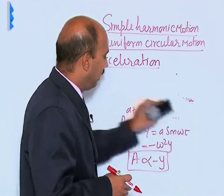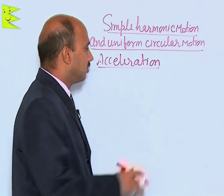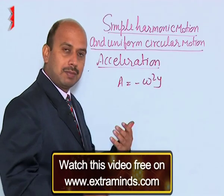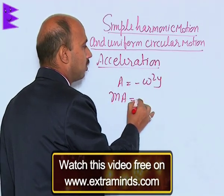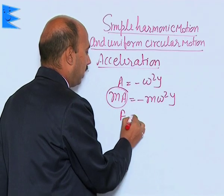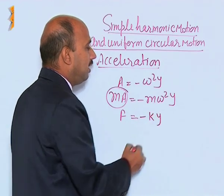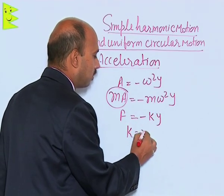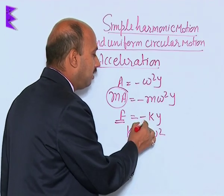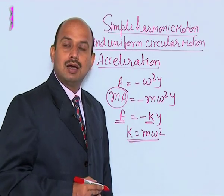Now, if we take A is equal to minus omega square Y and multiply both sides by the mass of the body, we will be getting M A is equal to minus M omega square Y. Here M A is known as force — that is the restoring force — and it equals minus K Y, where K is a positive constant and K is equal to M omega square. So this force is known as restoring force, K is known as the spring factor.